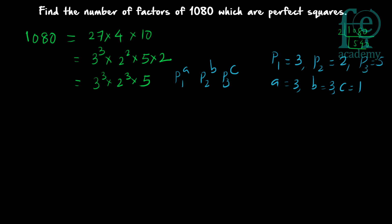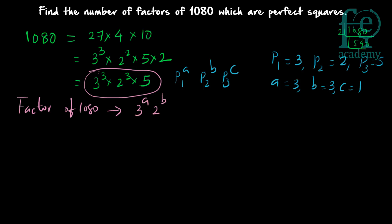Now, how do you form different factors of 1080? You try out different combinations of these numbers. Any factor of 1080 will be of the form 3 raised to a, into 2 raised to b, into 5 raised to c. Here a can take values from 0 to 3, b can take values from 0 to 3, and c can take values 0 or 1. These are the different combinations possible.